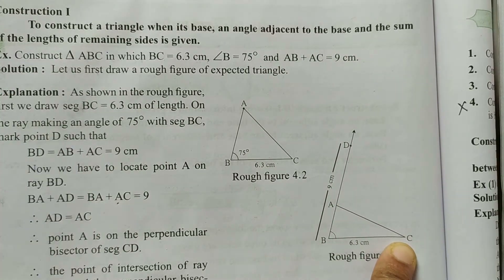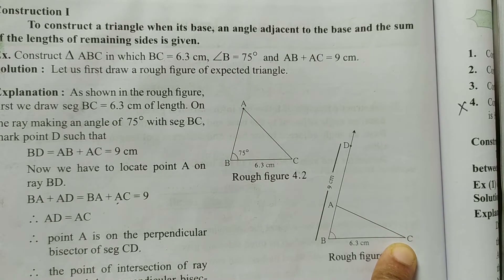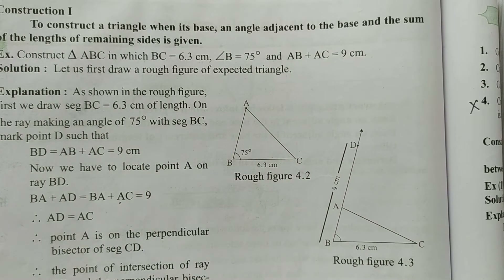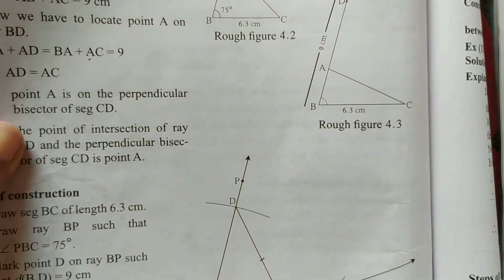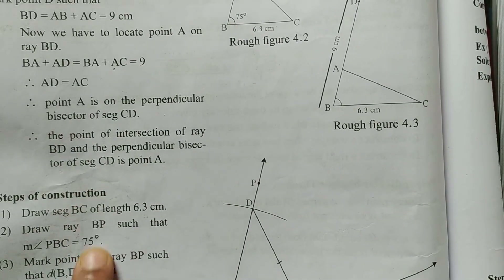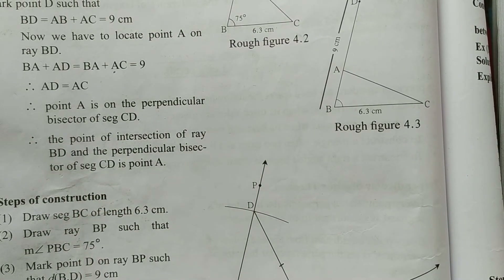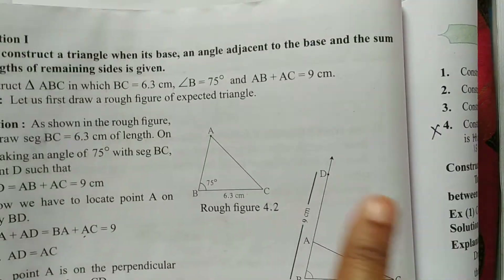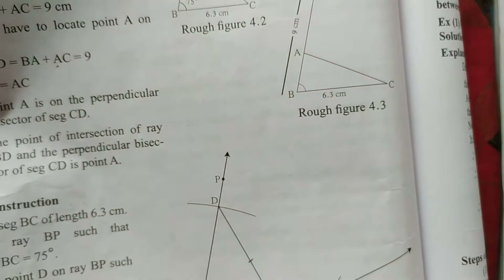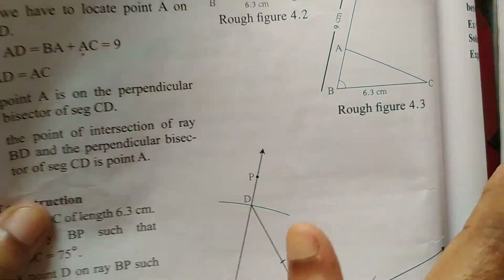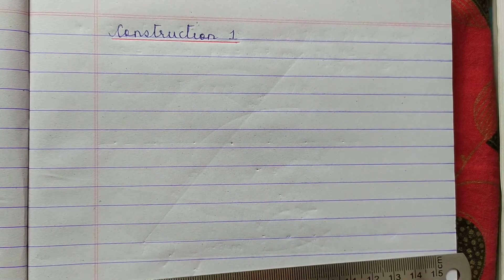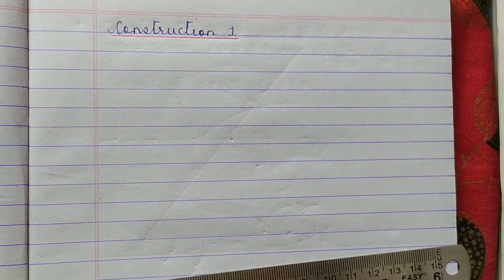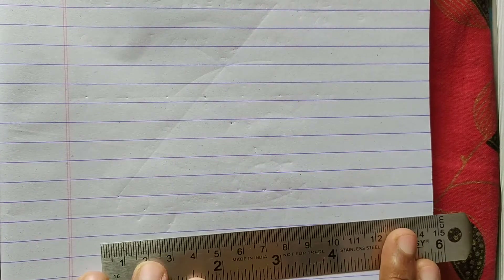So this is your explanation. For all these questions you have to draw a rough figure, write the explanation like this, and then draw the correct original figure. You do not have to write steps of construction for any of these questions — only rough figure, explanation, and the original figure. I am going to draw the original figure and show you how to do it.